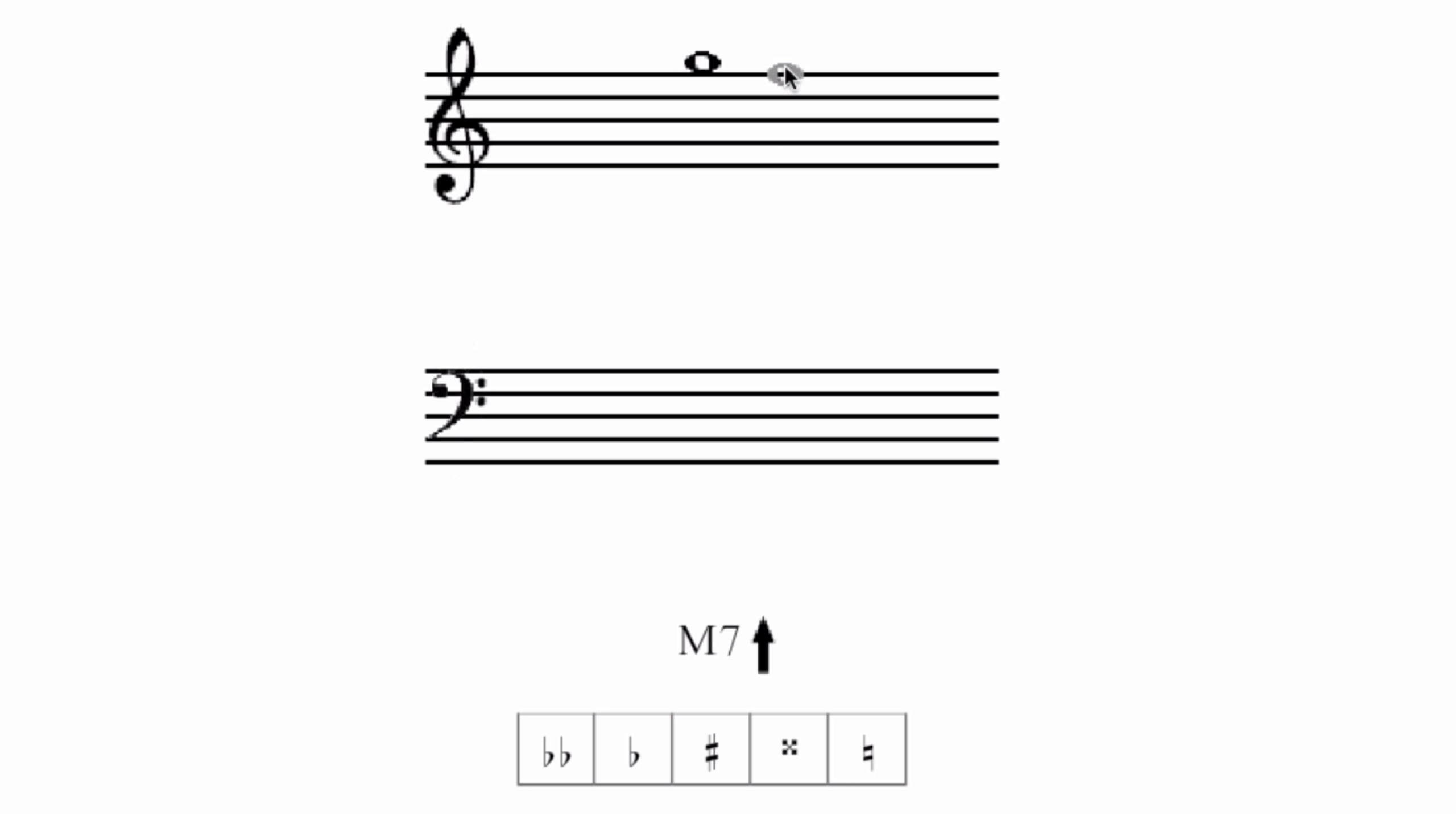So, here's my G. G, B, D, F sharp. I'm going to hit this sharp. G, B, D, F sharp. Cool, major 7. Submit.